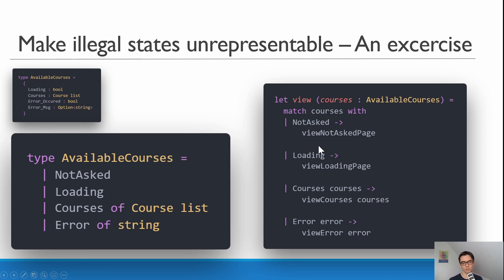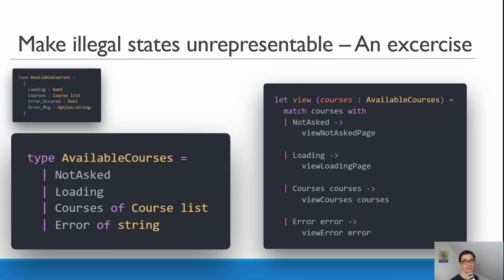The view function then uses pattern matching. When we are in the NotAsked state we show the view_not_asked page; if Loading we show the loading spinner; if we have Courses we show the courses; and if we have an Error we show the error. Because the error message is only present when we are actually in the Error state, we can't have error_occurred=false with an error message, or an error state with no message — eliminating potential runtime exceptions.